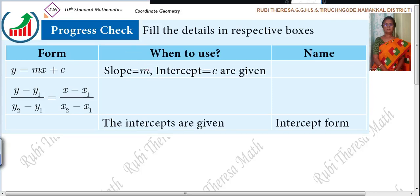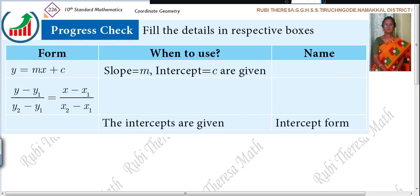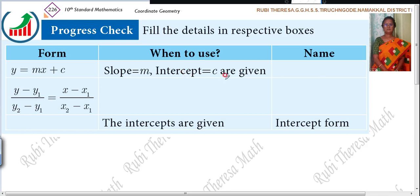Progress check. Y equal to Mx plus C. What is given here? Slope M and intercept C are given. When to use? When slope and the intercepts are given. When M and C are given, then what is the form of the straight line equation? Y equal to Mx plus C. This is the equation of straight line. What is the name for it? Slope intercept form, because slope is given and intercept is given.